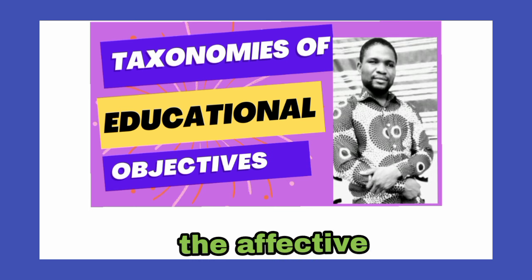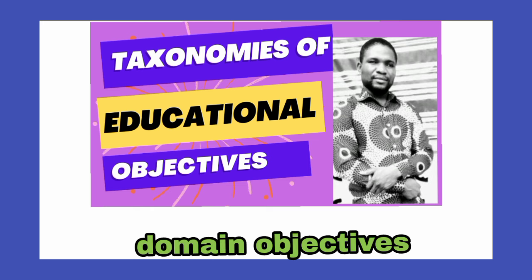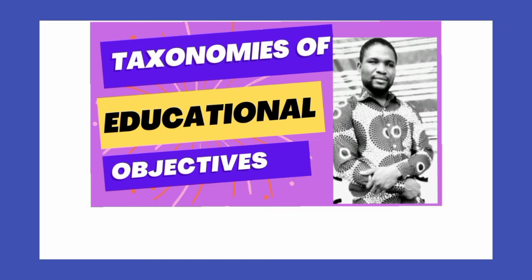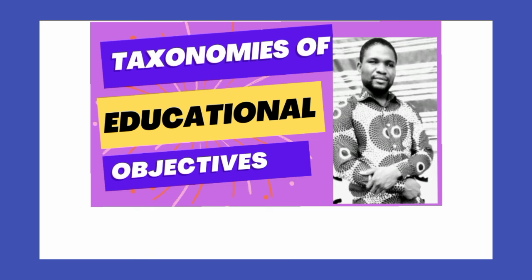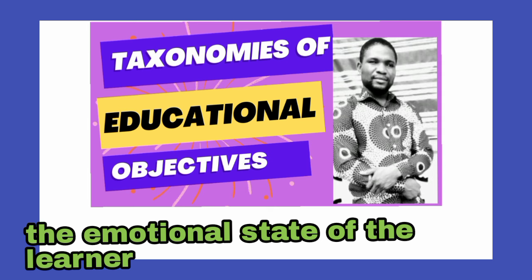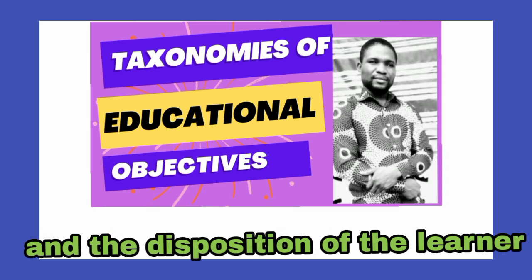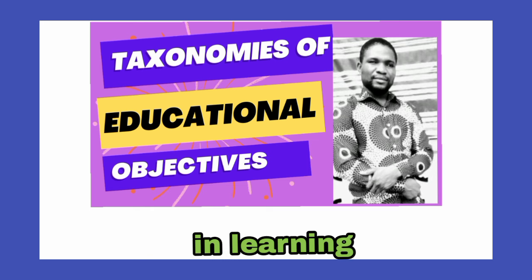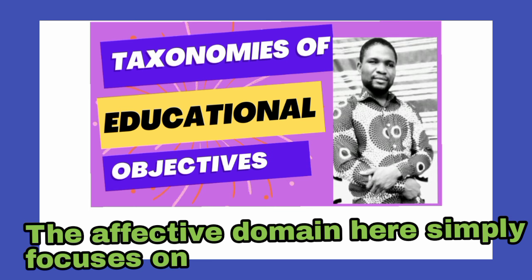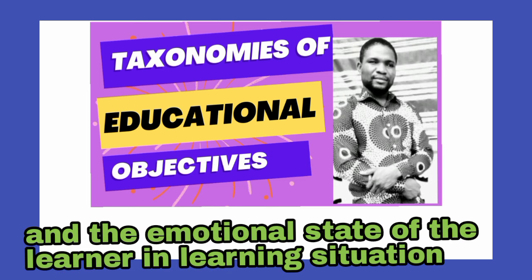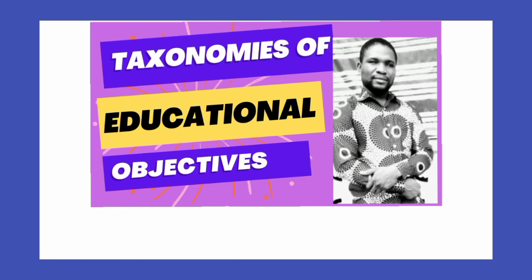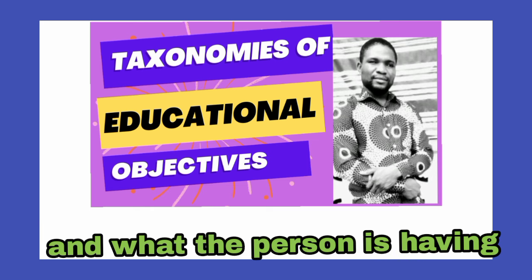The affective domain objective produces outcomes that focus on the feeling, the interest, the attitude, the emotional state of the learner, and the disposition of the learner. In learning, the affective domain focuses on what the child is interested in, how the child feels about learning, the attitude the child brings, the emotional state, and the learner's disposition.